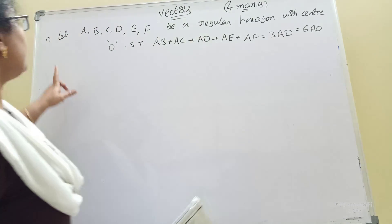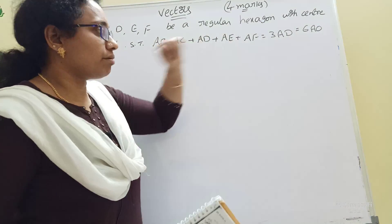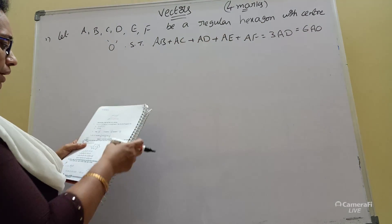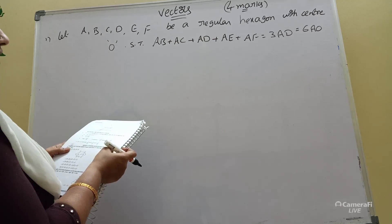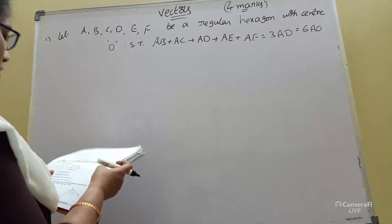Now let ABCDEF be a regular hexagon with center O. Show that AB plus AC plus AD plus AE plus AF equals 3AD, equal to 6AO.